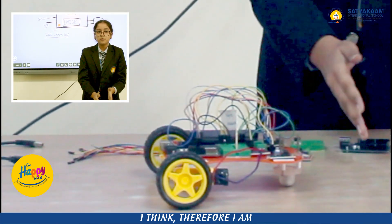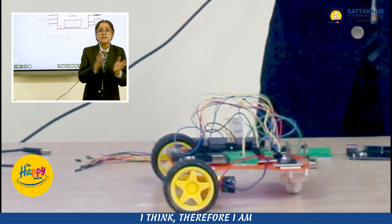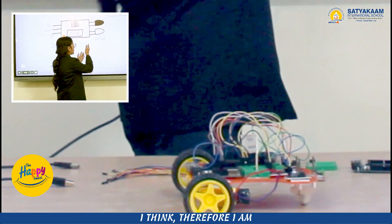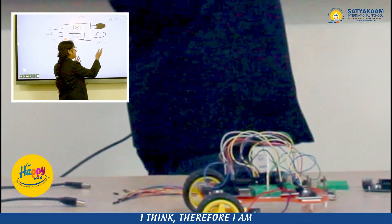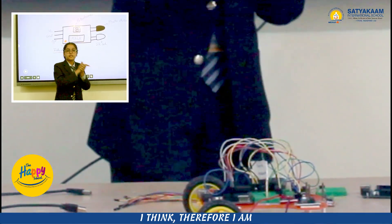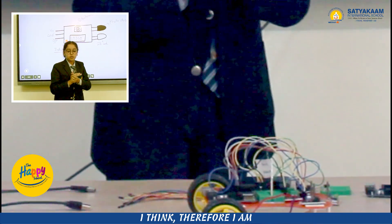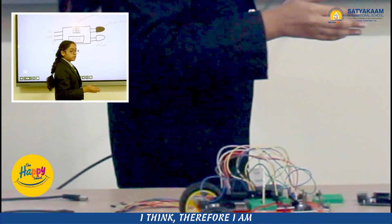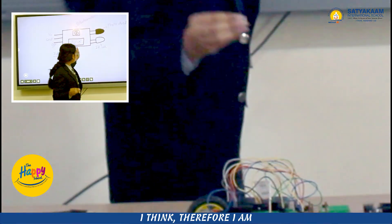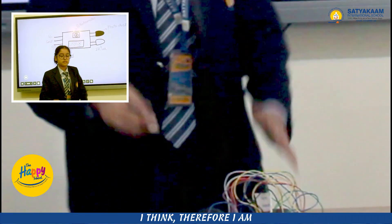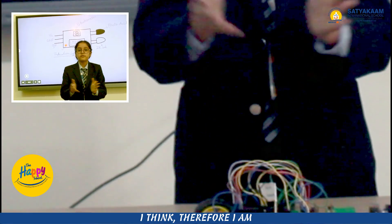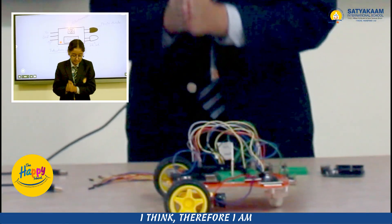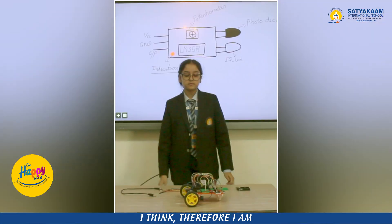If there is no object in front of the sensors, that means no infrared rays are being reflected back. So current won't flow through our IR sensor and the robot will stay at its place.